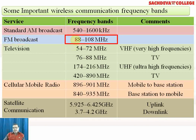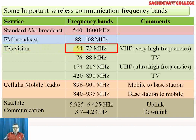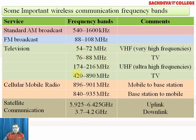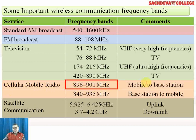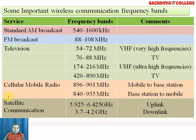Television communication covers many frequency bands across a wide spectrum: VHF bands are 54–72 MHz, 76–88 MHz, and 174–216 MHz; UHF band is 420–890 MHz. Cellular mobile radio frequency bands are 896–901 MHz for mobile to base station, and 840–935 MHz for base station to mobile. These are the various frequency bands for different types of communication services.